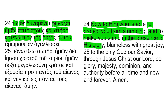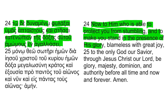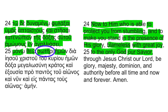I spent nearly an hour looking at the 'from stumbling and make you stand in the presence' portion of this manuscript, and could not make out what the scribe was intending to write. Please let me know if you have any ideas on what the intended words were. Amomus en agalease — blameless, with great joy. Blameless is dropped from the manuscript here. Mano theo — to the only God. Soteri hemon — our savior. And here, 'savior' is dropped from the manuscript.